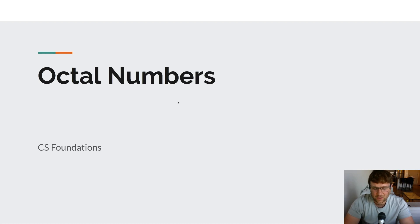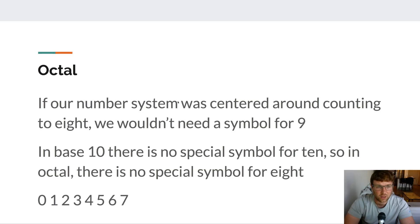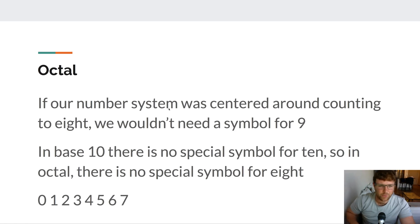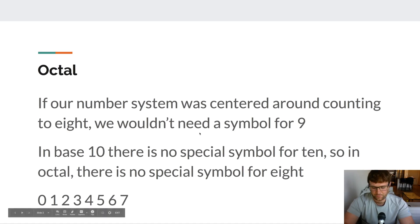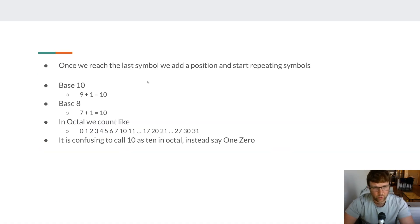Octals are base 8. If Homer Simpson were creating a number system, he has four fingers on each hand, so he'd be more comfortable counting in octal. In octal, since we're counting to 8, we don't need a symbol for 9 — and just like base 10 has no special symbol for 10, octal has no special symbol for 8. The digits in octal are just 0 through 7. Once we reach that last symbol, we start repeating digits and add a new position to the left.